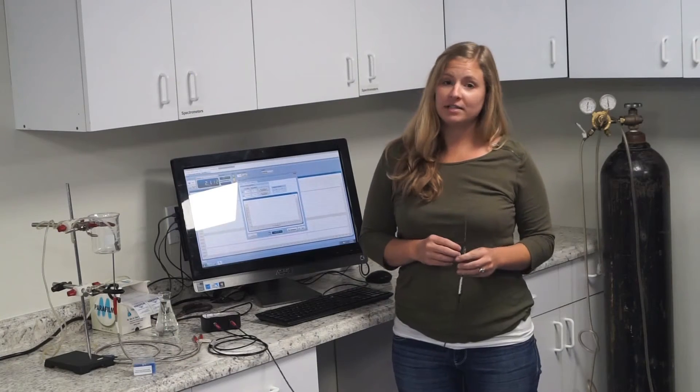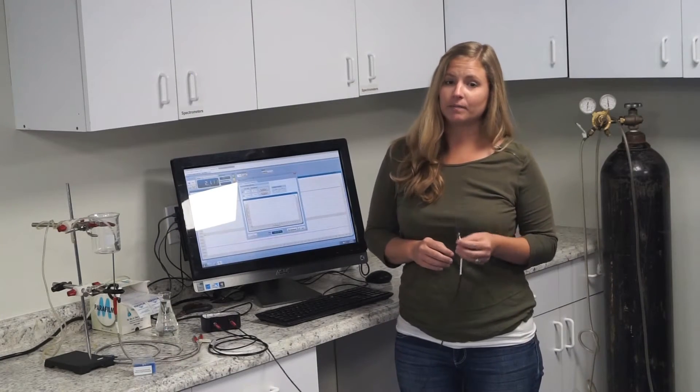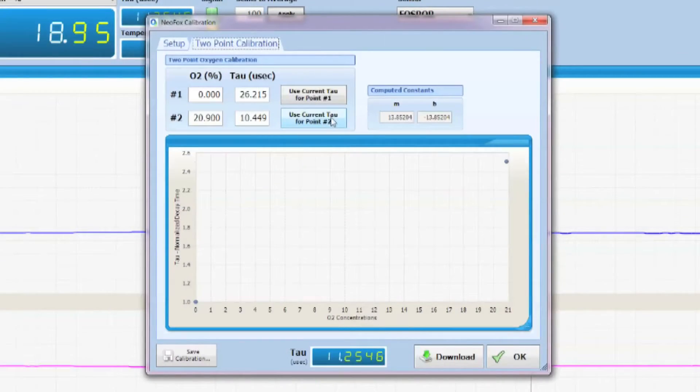Your first point is your easiest point to take, the ambient point. All you're going to do is click on the button that says use current tau for point number two.